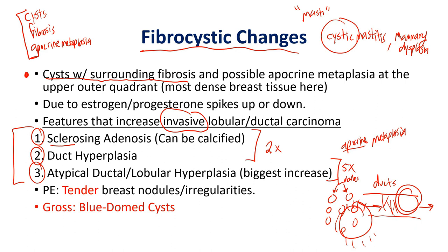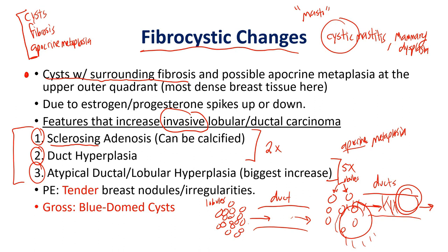Sclerosing adenosis — break down the words. Sclerosing tells you there's buildup of collagen causing sclerosis. Going back to the functional parenchyma: the lobules produce milk and send it into the duct to be secreted out through the nipple. In sclerosing adenosis, you're having an increased number of lobules, and when you have too many lobules, you begin to have increased collagen all around the area, which causes the sclerosis. So sclerosing adenosis is an increase in the number of lobules with surrounding collagen buildup causing sclerosis.